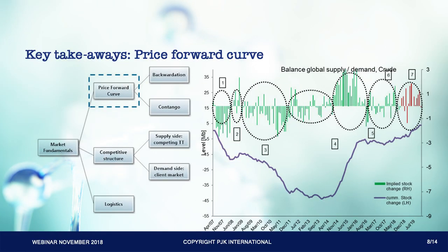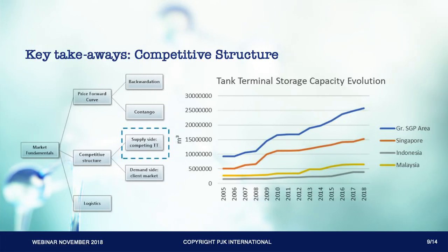Key takeaways — price forward curve. We have used EIA data to forecast the shape of the forward curve. As can be seen from looking at the cumulative stock changes, the oversupply is diminishing fast, supporting backwardation in the future. Note that backwardation and contango are prolonged price regimes and take time to switch into a new regime. This figure shows how Greater Singapore area tank storage capacities have developed over the last years. Singapore has historically been the largest provider of tank capacity in this area and has roughly tripled its capacity since 2005.